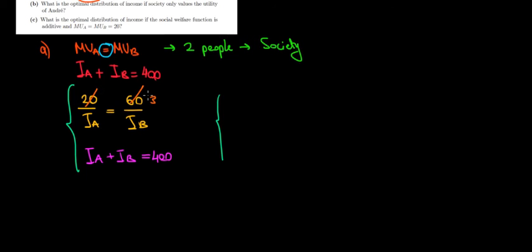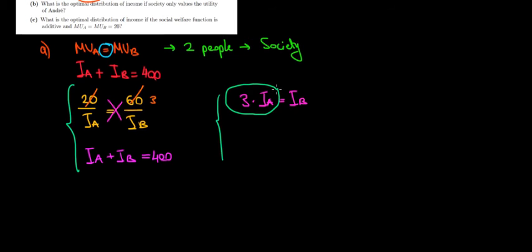By doing the cross multiplication, we get 3 times the income of Andre equals 1 times the income of Bernard, so income of Bernard equals 3 times income of Andre. Substituting into the second equation: income of Andre plus income of Bernard becomes income of Andre plus 3 times income of Andre.